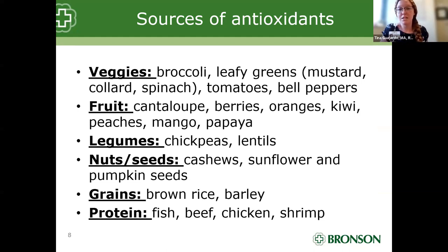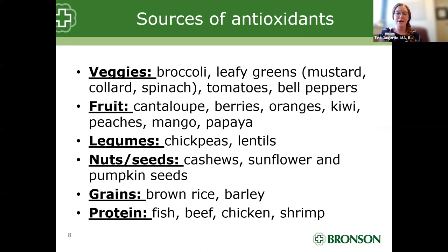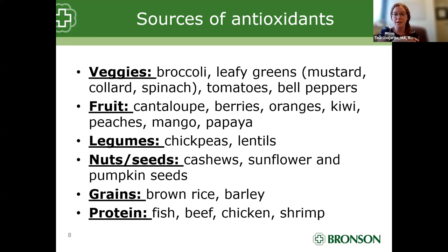We are spending most of our time today talking about antioxidants from herbs, but I also want you to be aware that antioxidants come from many other types of foods. On the screen you're seeing a list of fruits, vegetables, legumes, nuts, seeds, grains, and protein. Vitamin C sources such as bell peppers, broccoli, and oranges; vitamin E from leafy greens, cashews, and sunflower and pumpkin seeds; and zinc from chickpeas, lentils, and beef. Antioxidants come from a variety of whole food items.